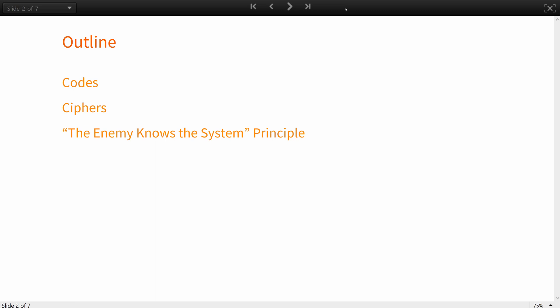In the previous lesson, you learned about steganographic methods that conceal the fact of secret communication. Cryptographic methods, on the other hand, do not hide the existence of a secret message, but its content.